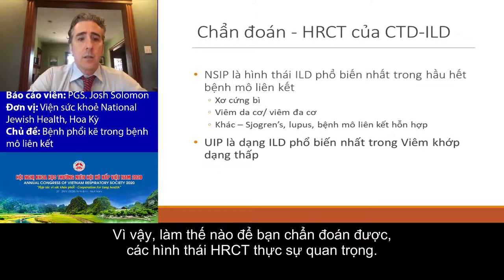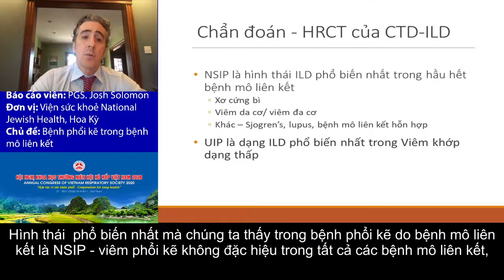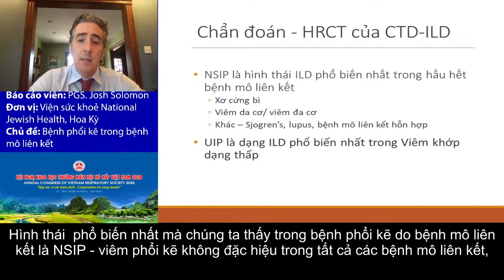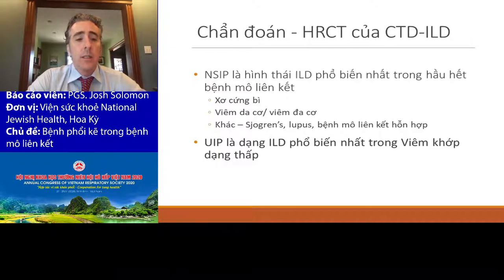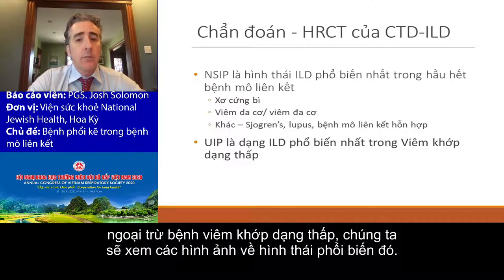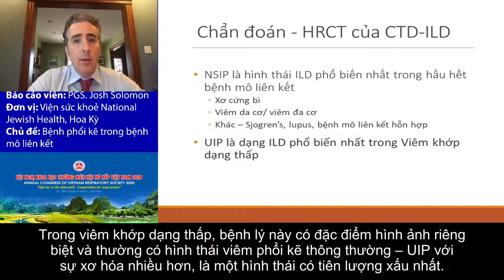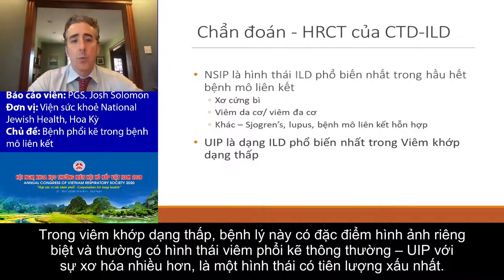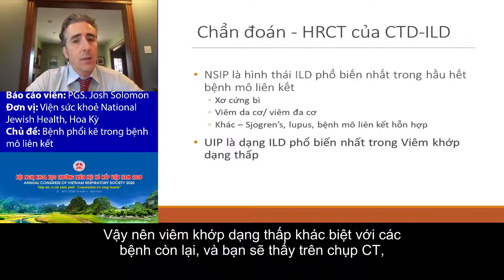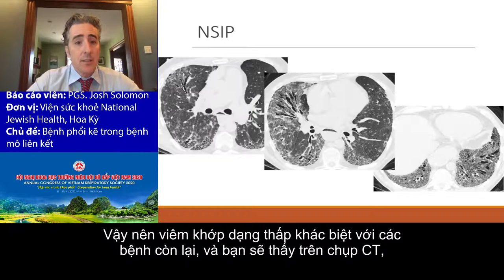So how do we diagnose it? HRCT patterns are really important. The most common pattern we see in connective tissue related ILD is a pattern called NSIP, standing for non-specific interstitial pneumonia. In all of the connective tissue diseases other than rheumatoid arthritis, it is the most common pattern you'll see. RA stands alone in that it more commonly has usual interstitial pneumonia, which is a more fibrotic pattern and one with a worse prognosis.